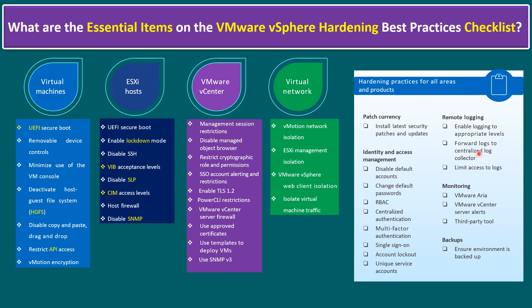For monitoring, the official VMware tool is VMware ARIA Operations. We can also use native alerting from the VMware vCenter server alerts. Or we can use any third-party tools like SolarWinds NPM — Network Performance Monitoring — or Nagios, Dynatrace, CNIMsoft, or any other third-party monitoring tools.